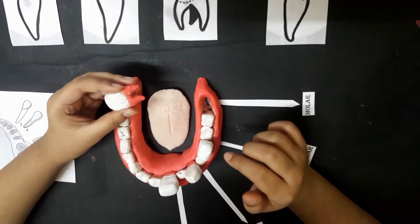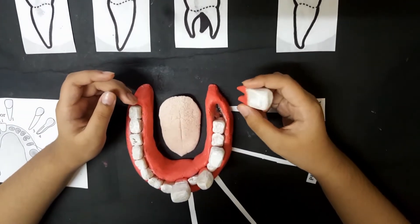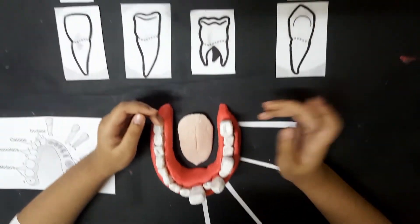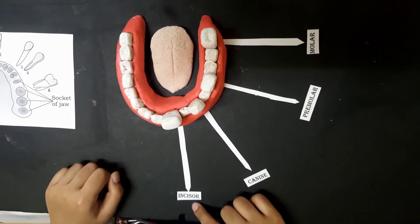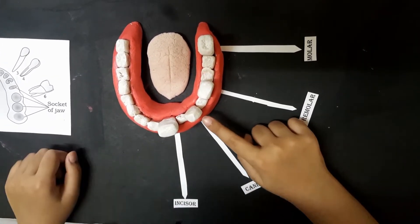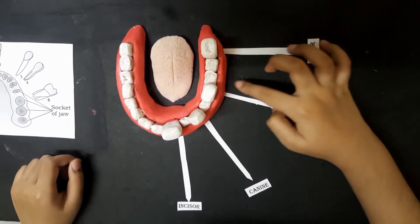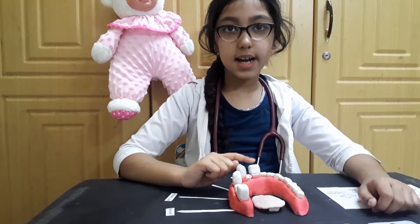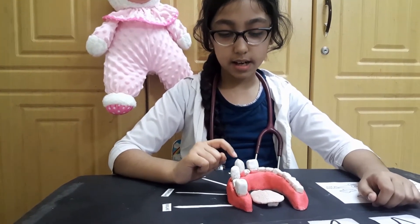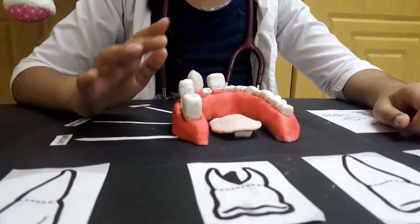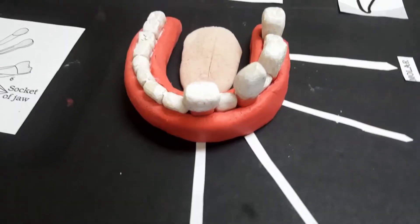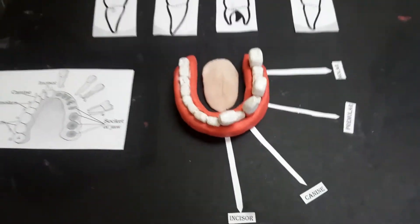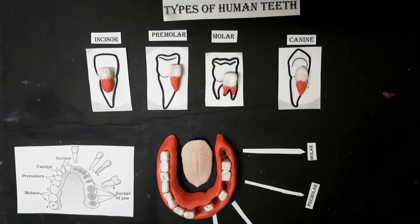Molars are used for crushing food and they come after the premolars. Now let's look at positions: this is the incisors position, this is the canines position, this is the premolars position, and this is the molars position. Now you can see the position of all the teeth — it is easy to understand.